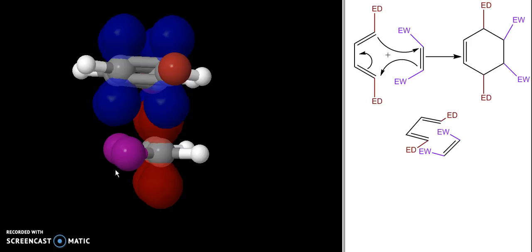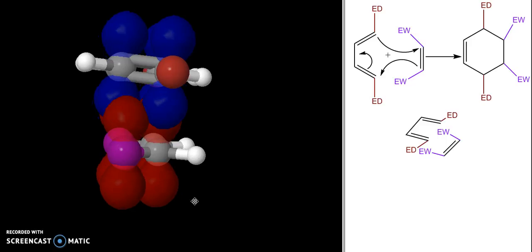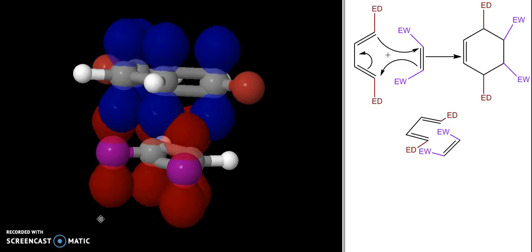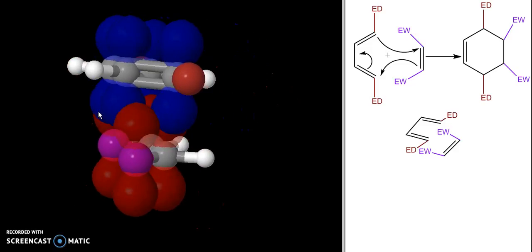In fact, if these electron withdrawing groups are something like cyano, which have p orbitals on them themselves, you can see that the p orbitals on my electron withdrawing groups actually interact with the p orbitals on the diene.